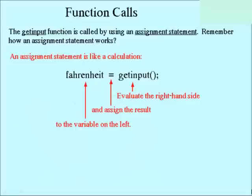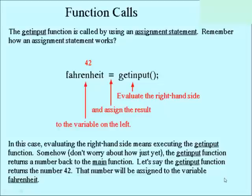Notice that that function call is an assignment statement. It's called by using an assignment statement, and an assignment statement works by evaluating the right-hand side and assigning the result to the variable on the left. So an assignment statement is pretty much like a calculation. In this case, evaluating the right-hand side gave us a value of 42, and we don't really have to worry about how that number gets back to main — let's just say it returns a value of 42.